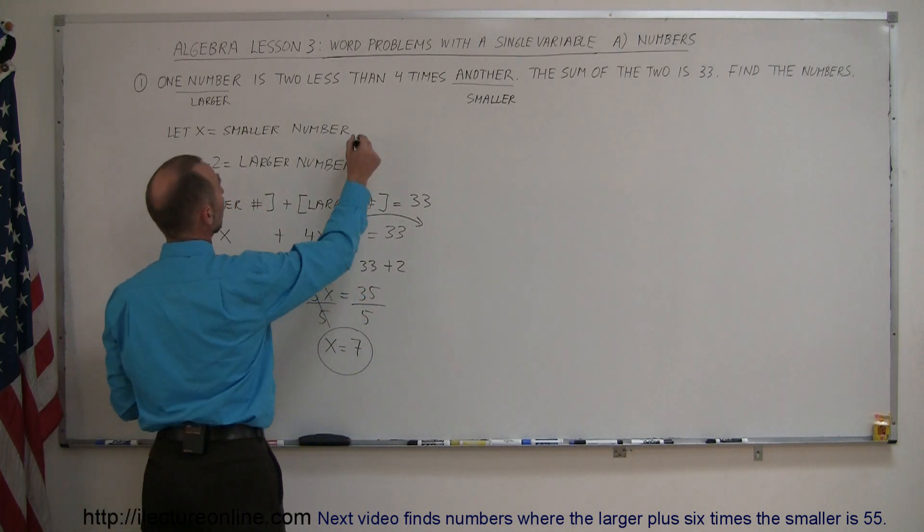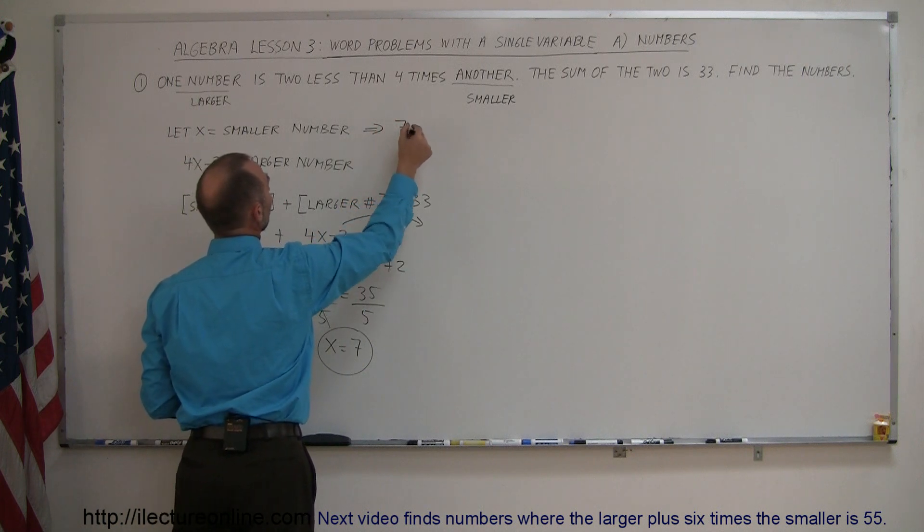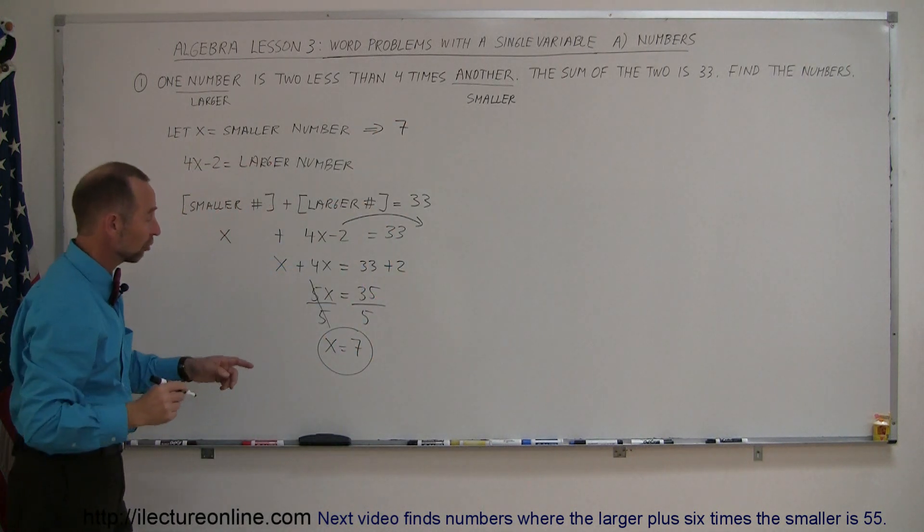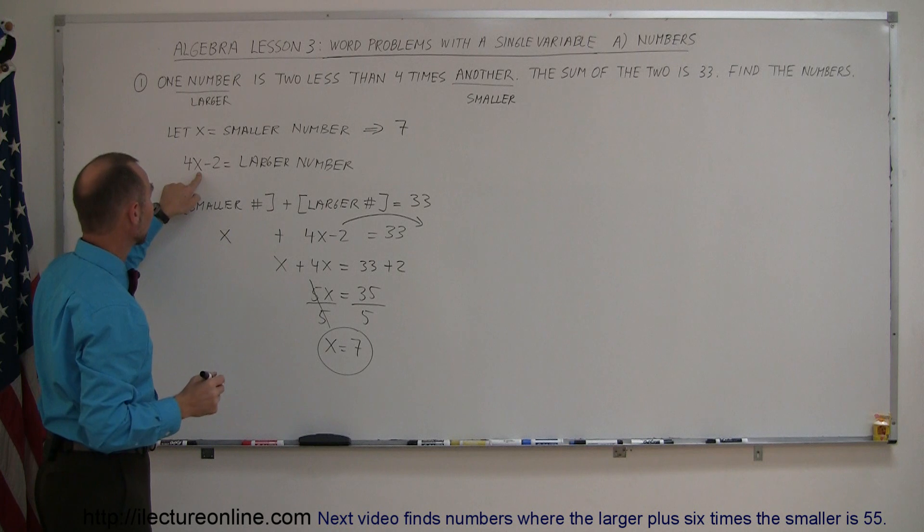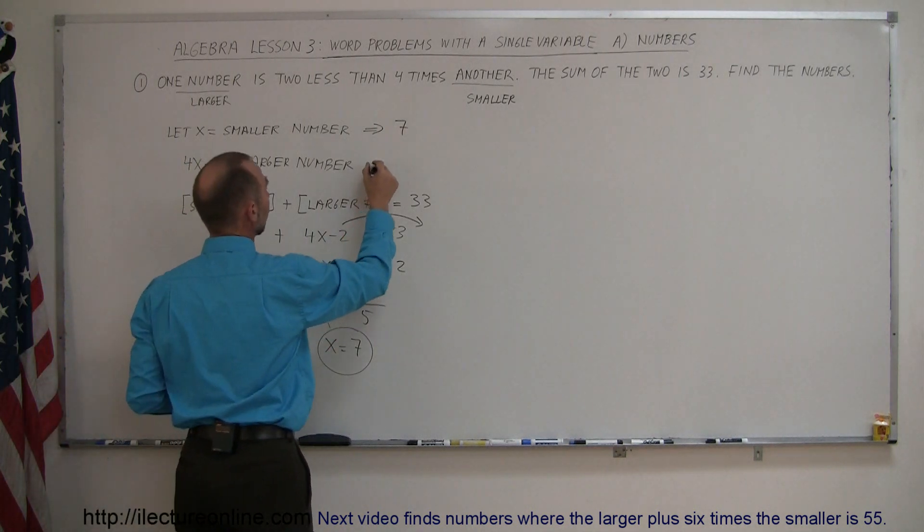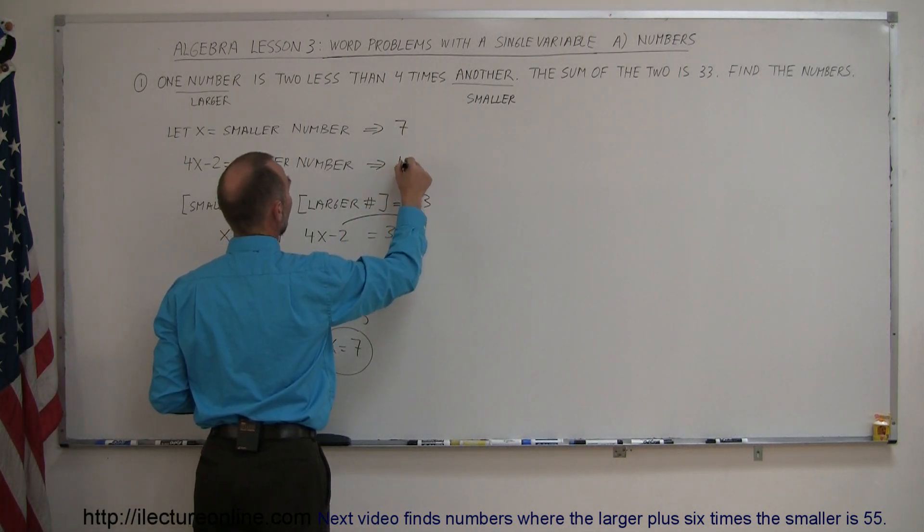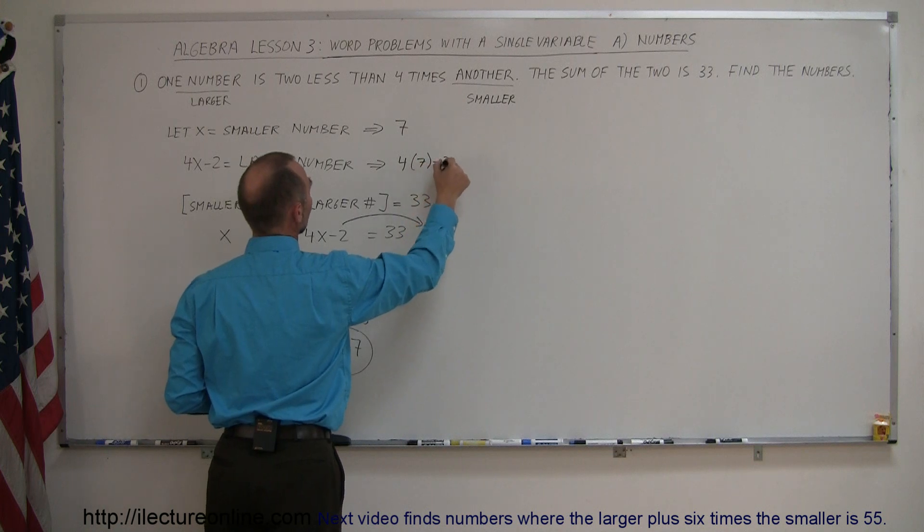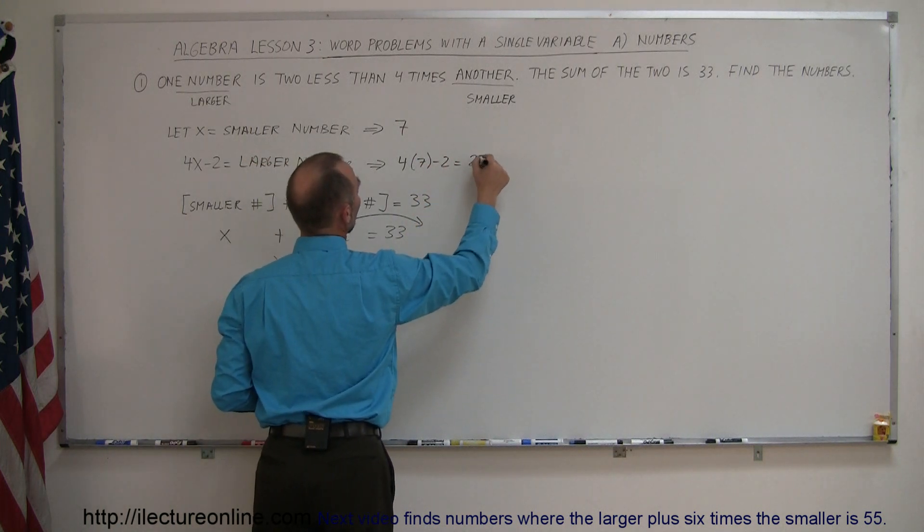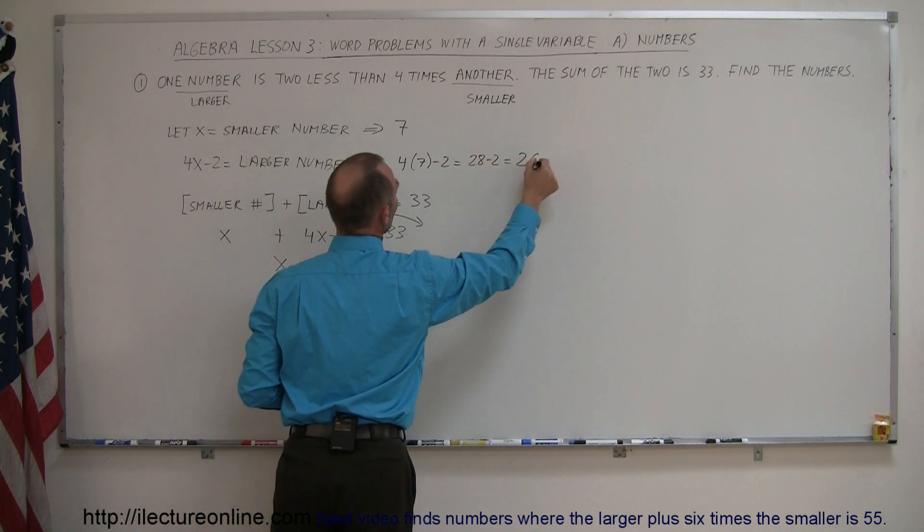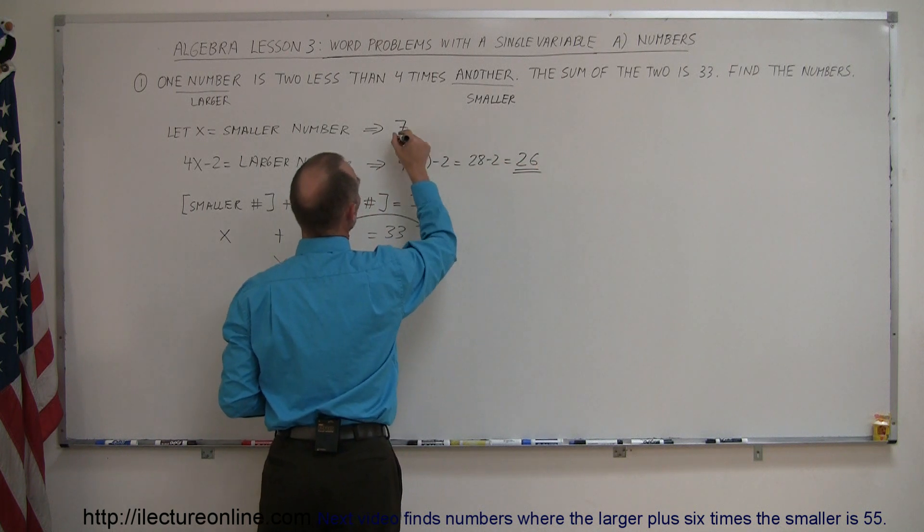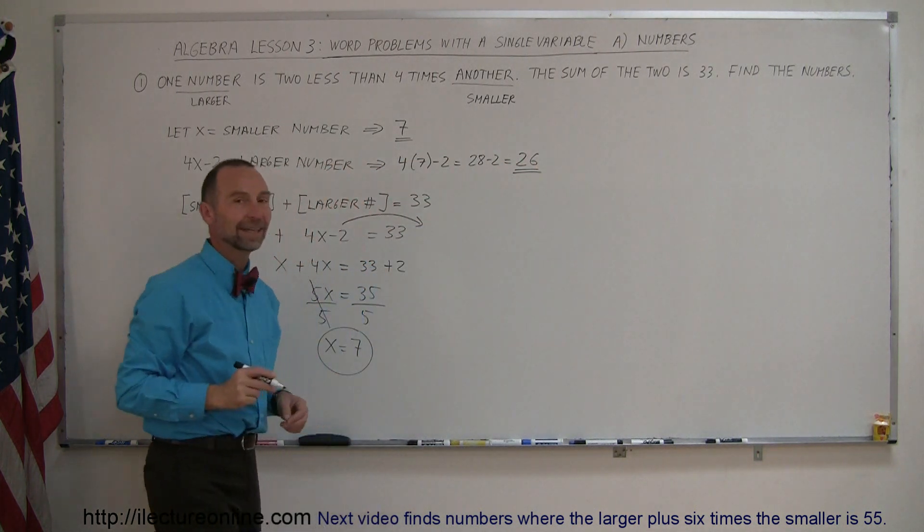So the smaller number is 7. What about the larger number? Well, the larger number is 4 times 7 minus 2. So this is equal to 4 times 7 minus 2, which is 28, minus 2, which is 26. So the larger number is 26, the smaller number is 7.